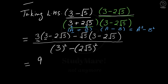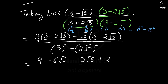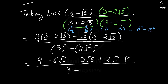3 times minus 2 root 5 gives us minus 6 root 5 (plus times minus is minus). Next, minus root 5 times 3 gives minus 3 root 5. Then minus root 5 times minus 2 root 5 — minus times minus gives plus — so we get plus 2 times root 5 times root 5. In the denominator we have 9 minus (2 root 5) squared, which is 9 minus 4 times 5, giving 9 minus 20.